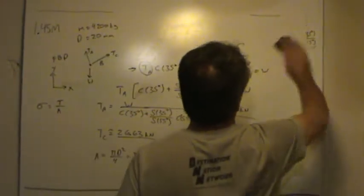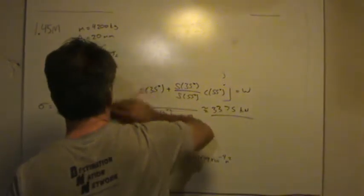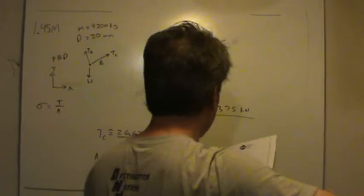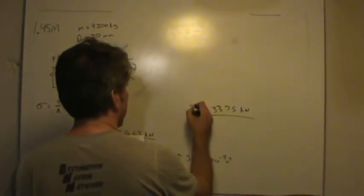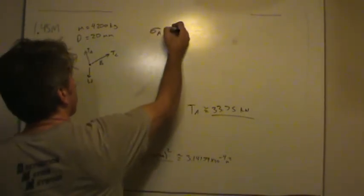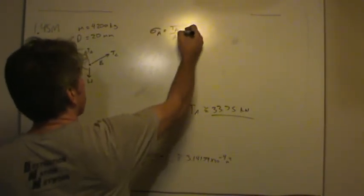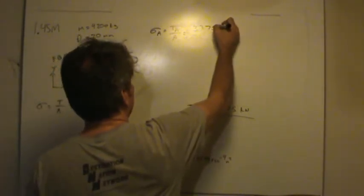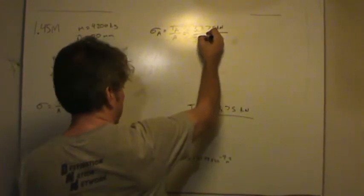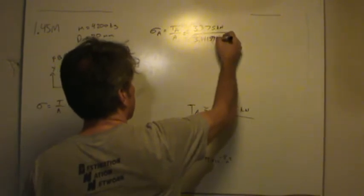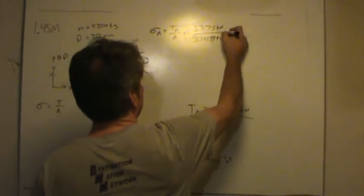Now let me erase, because I'm running out of space here. Erase this upper static stuff. And we're going to need that number, so I won't get rid of it yet. This was the tension in rod A. And so now let's calculate the stress. So the stress in rod A would be the tension in rod A divided by the cross-sectional area. So that's 33.75 kilonewtons divided by 3.14159 times 10 to the negative 4th square meters.